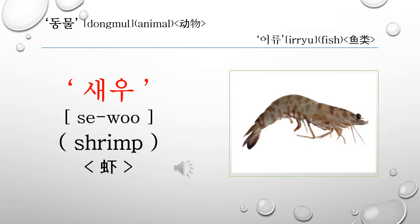This word is 새우. 새우 is called a shrimp in English and it is called 샤 in Chinese. Let's read it again: 새우.